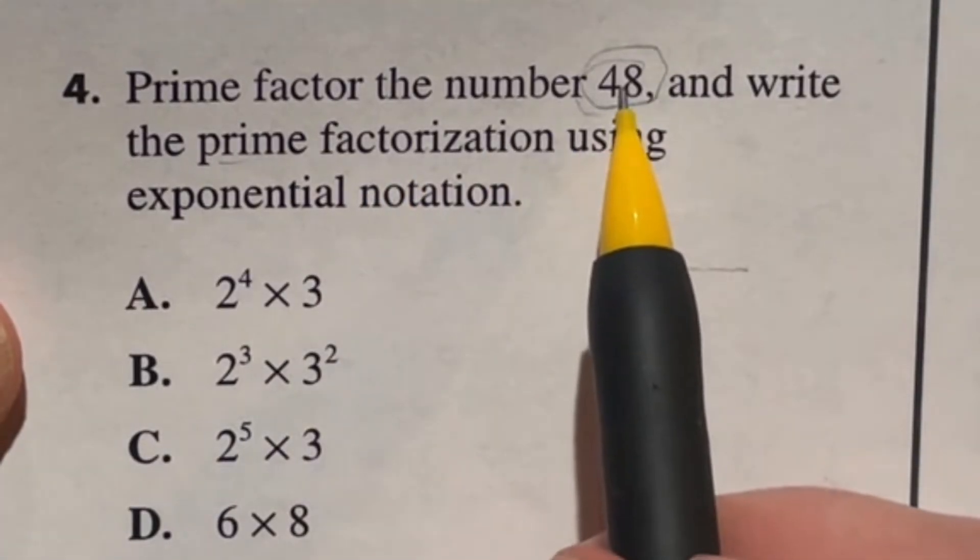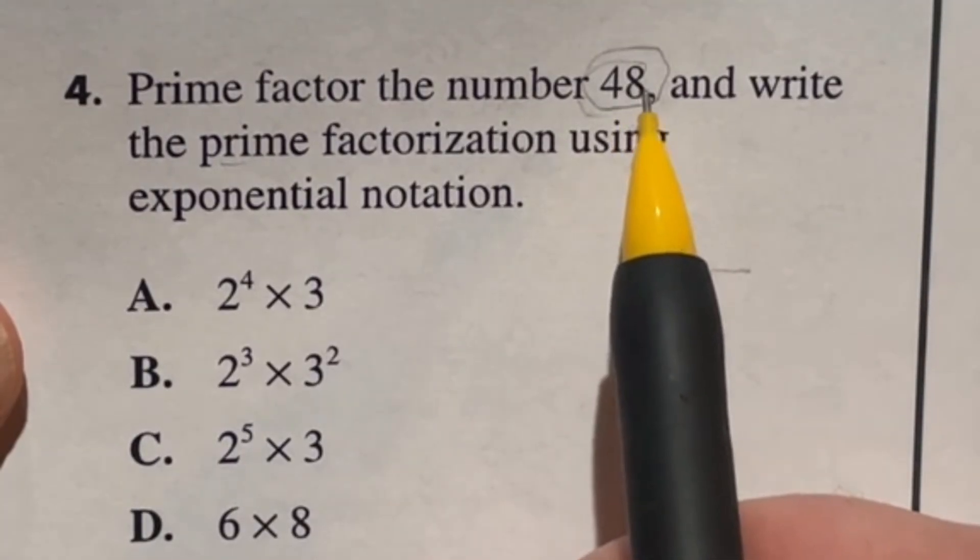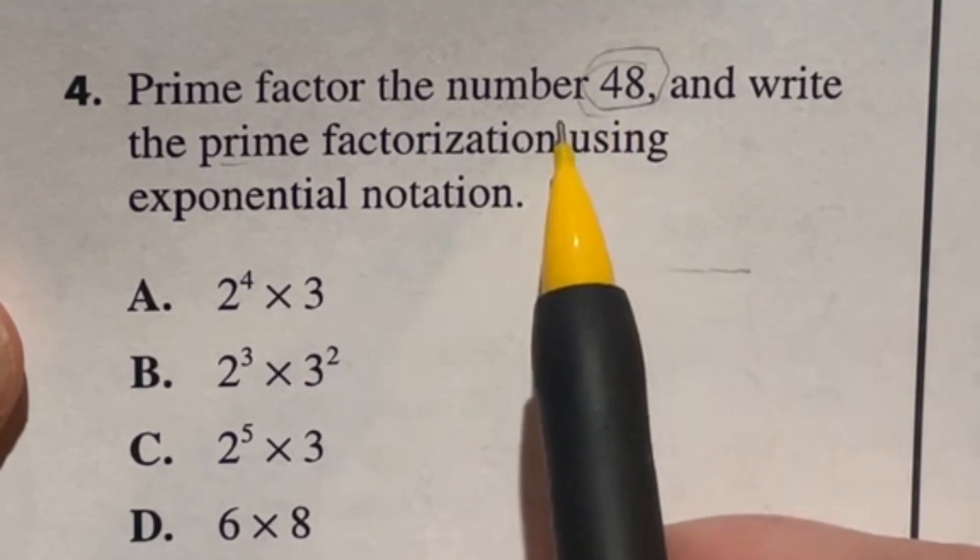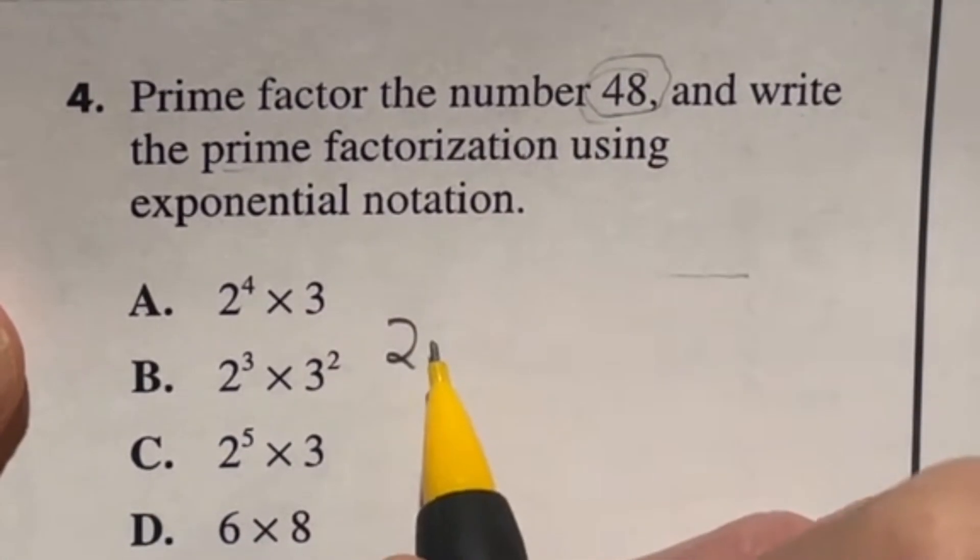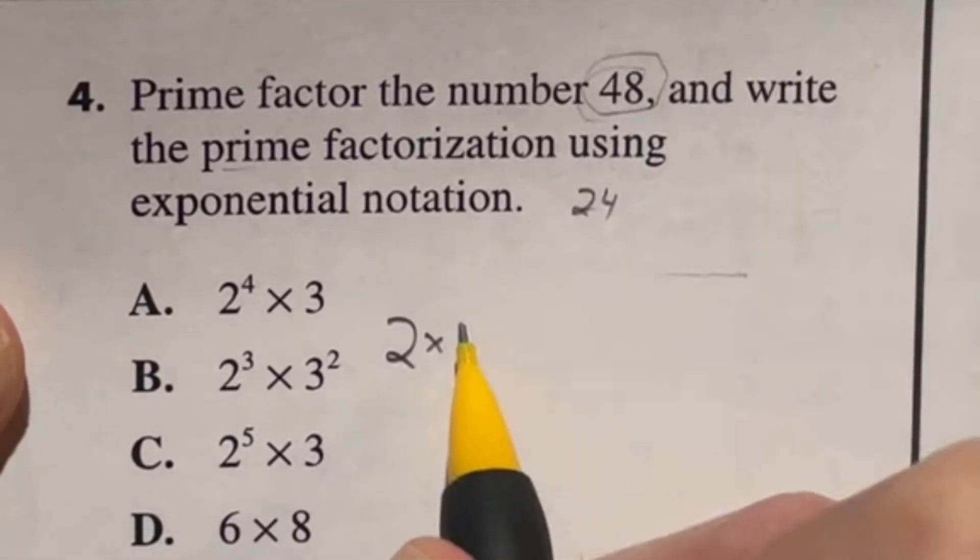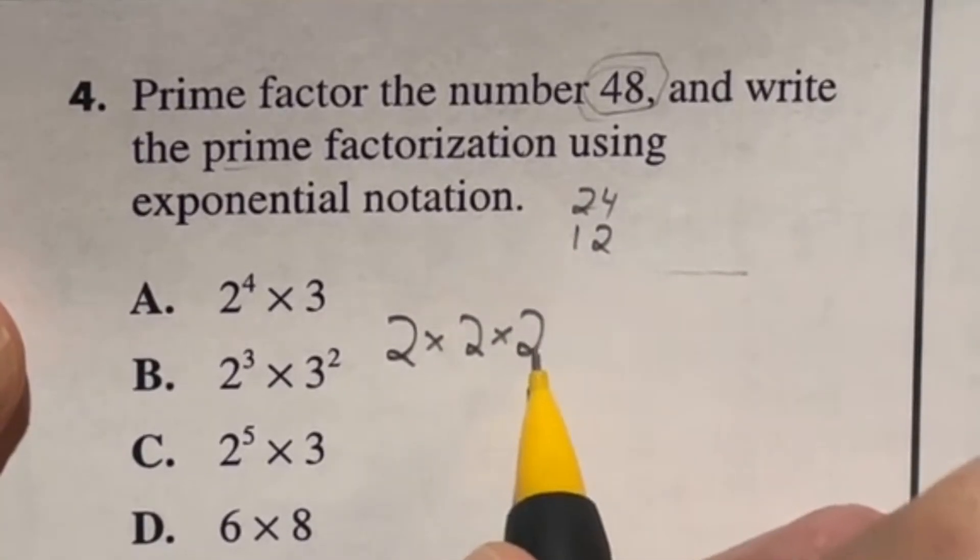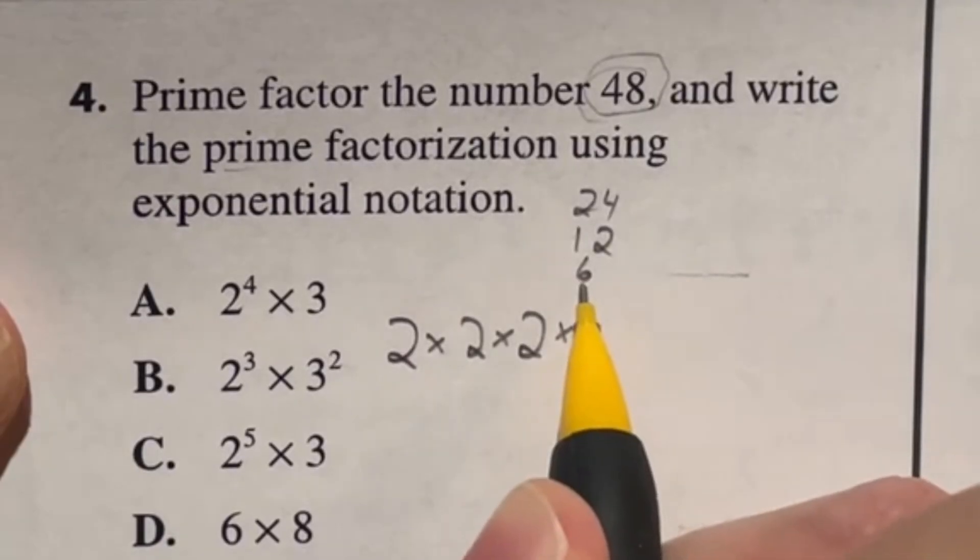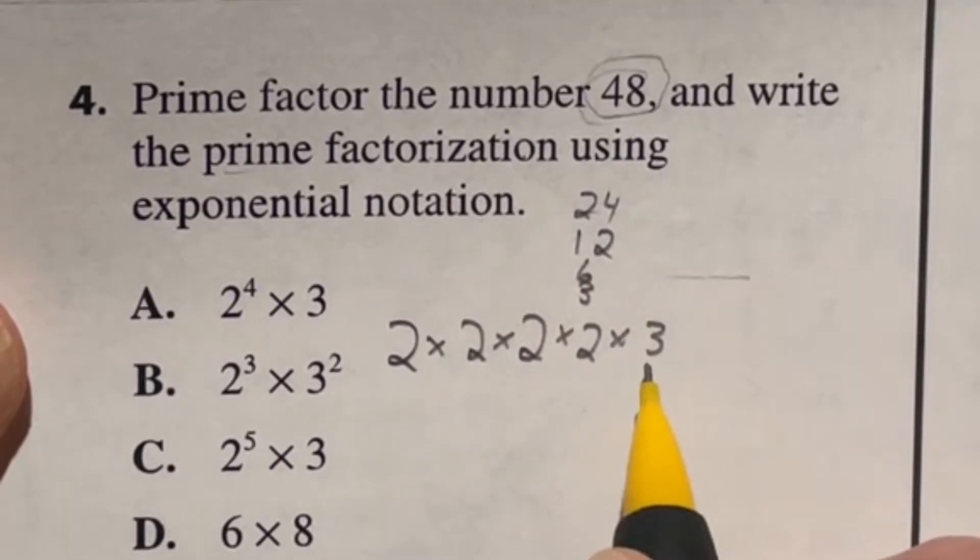The best way I know to do this is to just keep dividing by two until you can't anymore, and then move on to the next numbers you can divide by until all the numbers can't be divided by anything but those numbers and the number one. So let's start off dividing by two. 48 divided by two is going to be 24. 24 divided by two is going to bring me down to 12. 12 divided by two is going to bring me down to six. Six divided by two is going to bring me down to three. And three can't be divided anymore, so I'm going to go ahead and put a three in there.